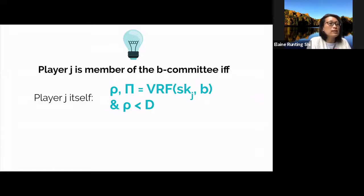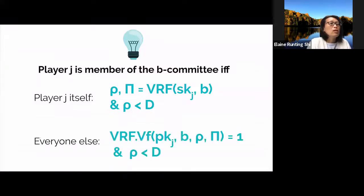Now, a player can use its secret key SK_j to determine if it's a member of the b committee, and the b committee defines the set of players who are allowed to vote on the bit b. If the VRF outcome on the input bit b is less than some difficulty parameter D, then the player is a member of the b committee. Note that the adversary does not have the honest player's secret keys, and therefore it cannot predict in advance who's in the b committee.